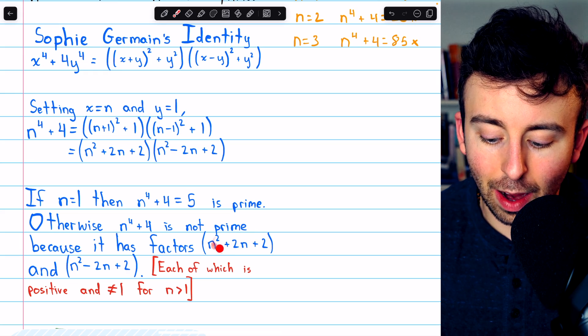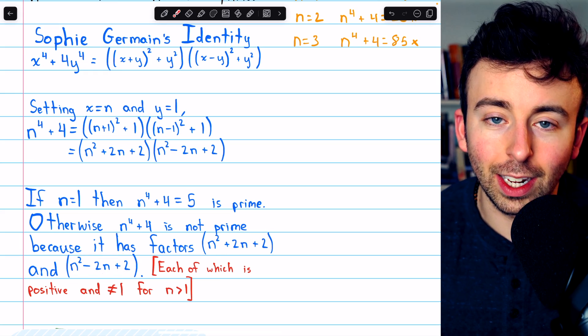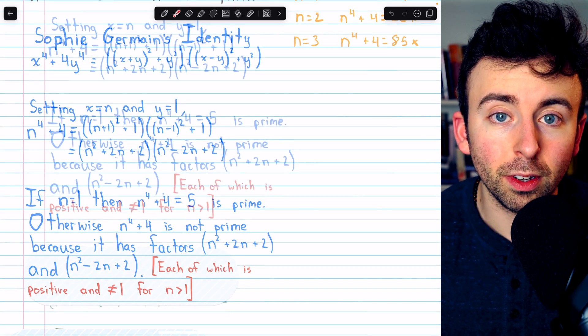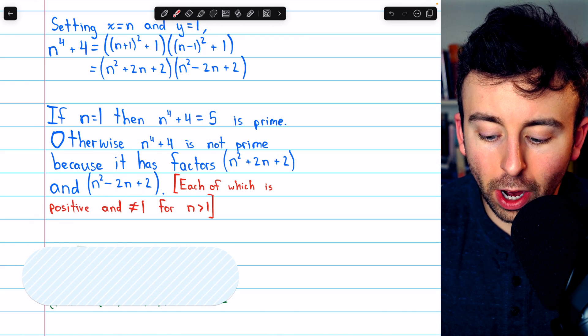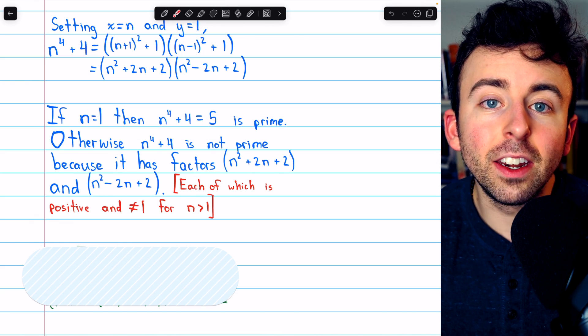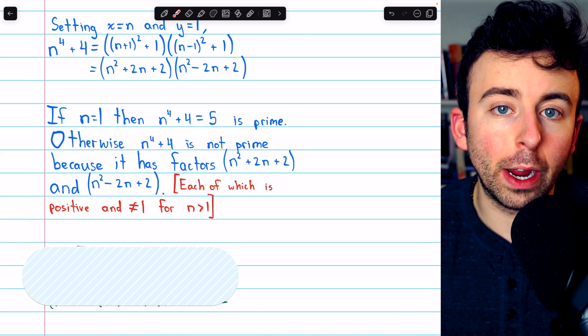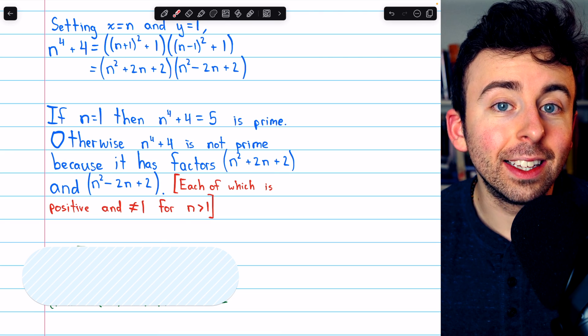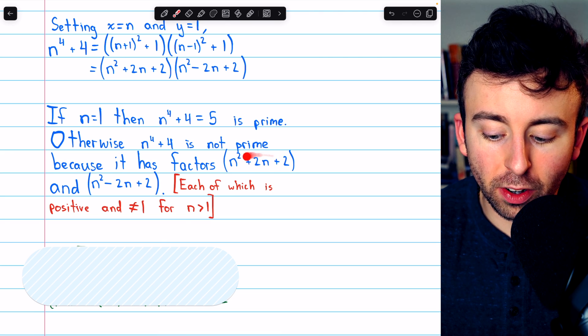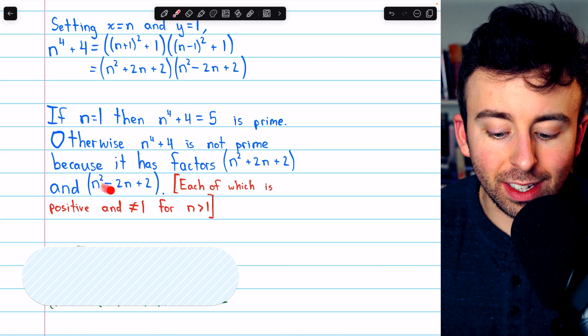And they're both clearly integers, because everything here is just multiplication and addition of integers. And we know that both of these expressions are positive and not equal to 1 for n greater than 1, because when n does equal 1, this expression is equal to 5, this one is equal to 1.